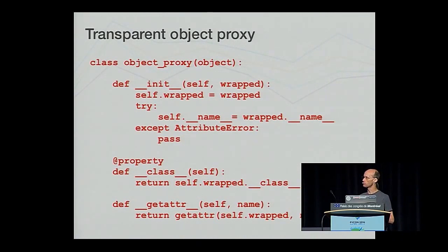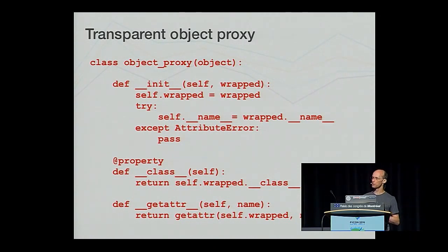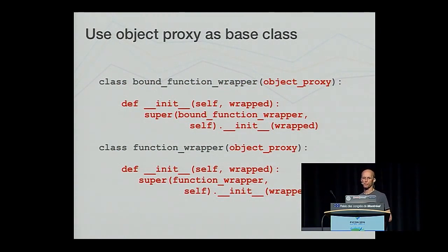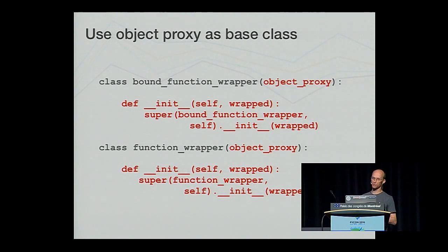The solution is what's called an object proxy. This is a special wrapper class which looks and behaves like what it wraps. It is a complicated beast in its own right, so I'm going to gloss over a lot of details of this. In short, it copies limited attributes from the wrapped object to itself and otherwise uses special methods, properties, and __getattr__ to fetch attributes from the wrapped object only when required. What we now do is derive our wrapper class from the object proxy. Doing so, attributes like __name__ and __doc__ when queried from the wrapper return the values for the wrapped function instead.